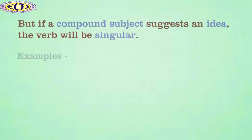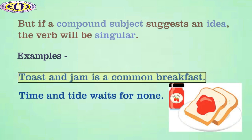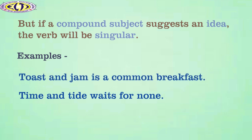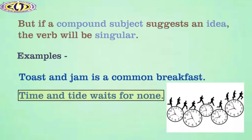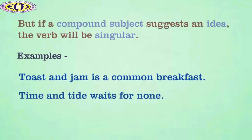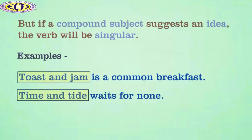But if a compound subject suggests an idea, the verb will be singular. For example, toast and jam is a common breakfast. Time and tide waits for none. Here, in these sentences, the subjects are compound and they suggest an idea, so they take a singular verb.